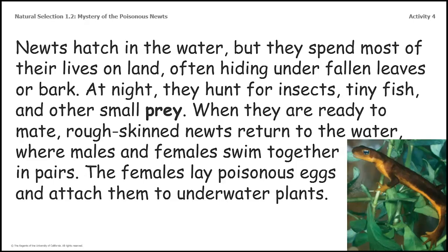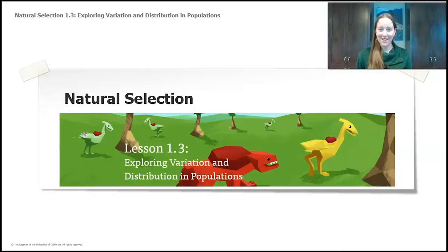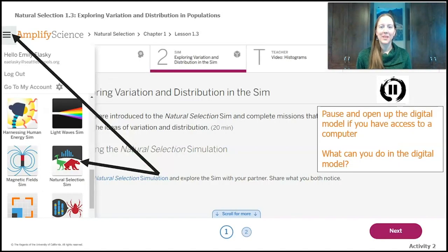Now that we've read the article, take a moment and record two things you learned about our newt population. We're moving on to natural selection 1.3: exploring variation and distribution in populations. I'm going to introduce you to our digital model, the natural selection simulation.